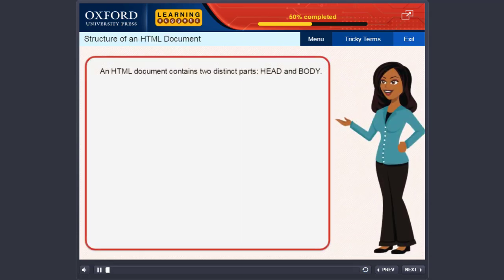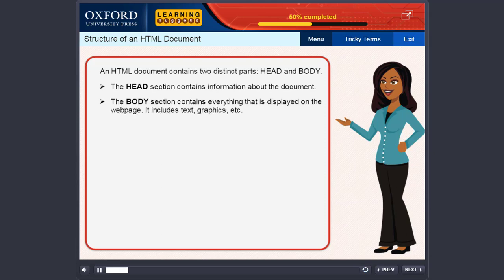An HTML document contains two distinct parts: head and body. The head section contains information about the document. The body section contains everything that is displayed on the web page. It includes text, graphics, etc.